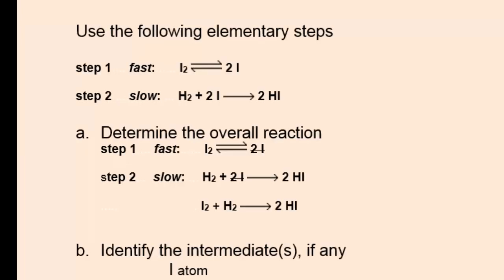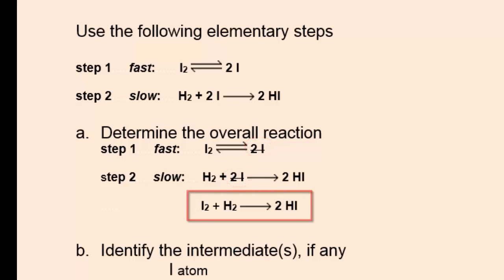This example involves a step at equilibrium. First, determine the overall reaction by adding the two elementary steps. The iodine atom cancels, and we're left with I2 plus H2 yields two HIs. Because the iodine atom canceled when adding the two elementary steps, the iodine atom is an intermediate.